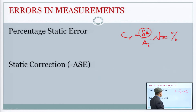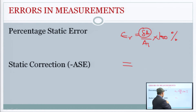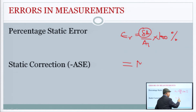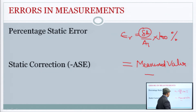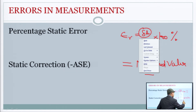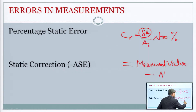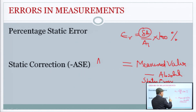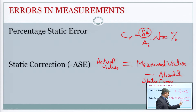Static correction का मतलब है: measured value में से absolute static error को minus कर दो तो actual/true value मिल जाती है। यानि: Actual value = Measured value − Absolute static error. अगर पहले से absolute static error दी हुई है, तो measured value से minus करके actual value मिल जाती है।